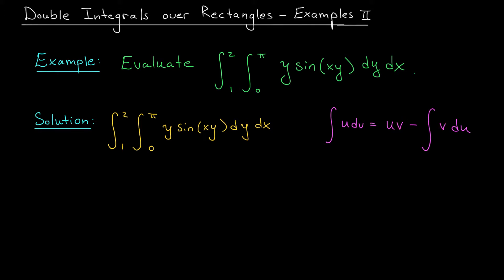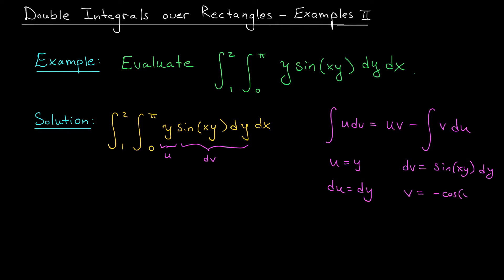Here, u is the term that gets differentiated to du, and dv is the term that gets integrated to v. I'm going to set u equal to y, because differentiating it makes it simpler. That means dv equals sine(xy) dy. So if u equals y, then du equals dy. And if dv equals sine(xy) dy, then v equals minus cos(xy) over x. You can verify this by differentiating with respect to y to get sine(xy) back.